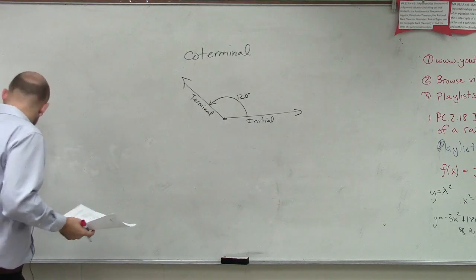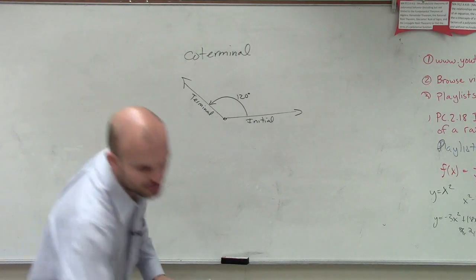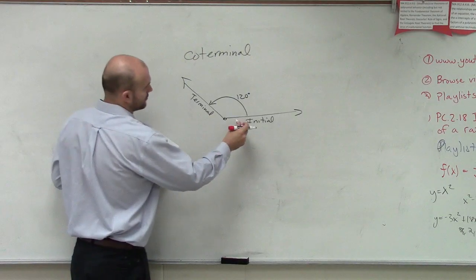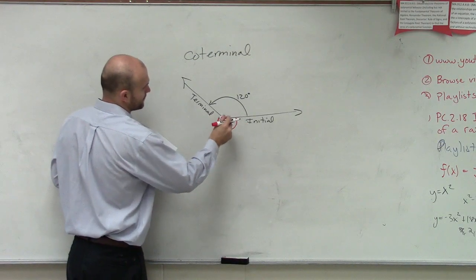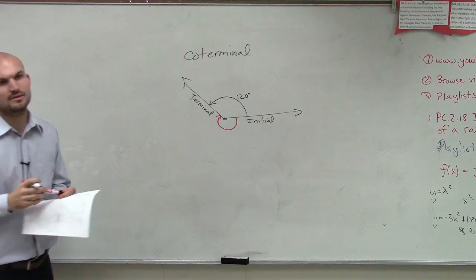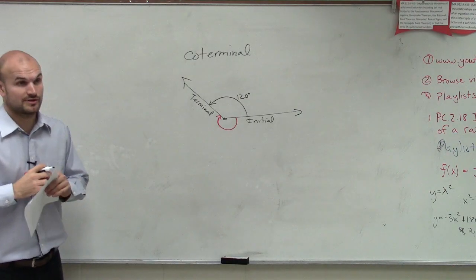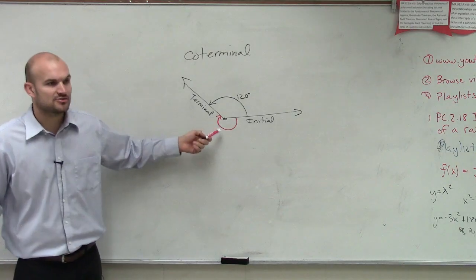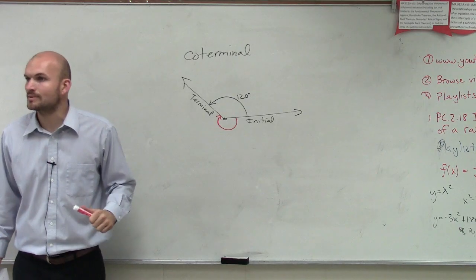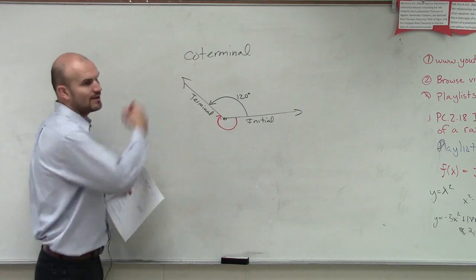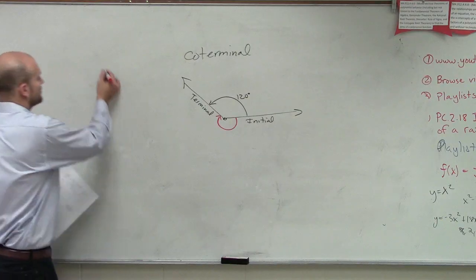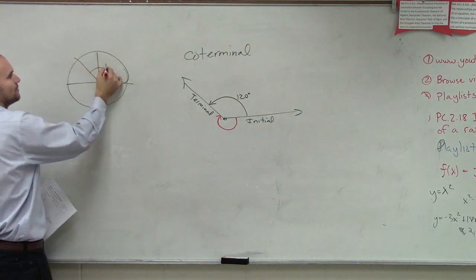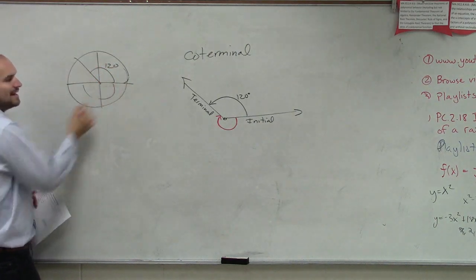Now, what was the other way that we talked about you can have the same initial and terminal side? You could go in the other direction, right? So we can go in this direction. Now, is that still 120 degrees? No, it's larger than 120 degrees, right? But what is that measurement? Well, that's one way to find coterminal angles. Think about it. All the way around a circle is how many degrees? 360, right?